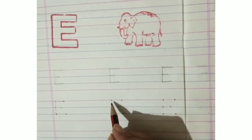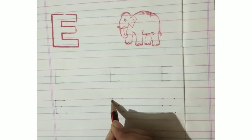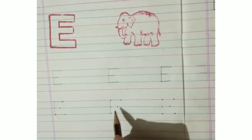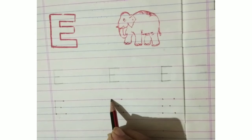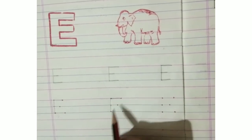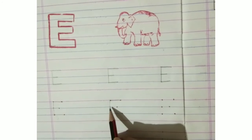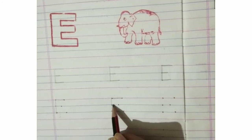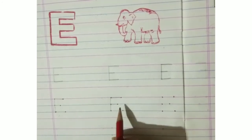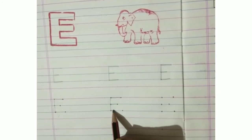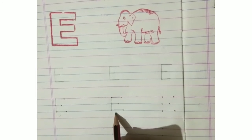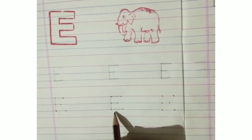Standing line, up to downwards, like this. Sleeping line, like this. Again sleeping line, again sleeping line. This is your E, letter E.